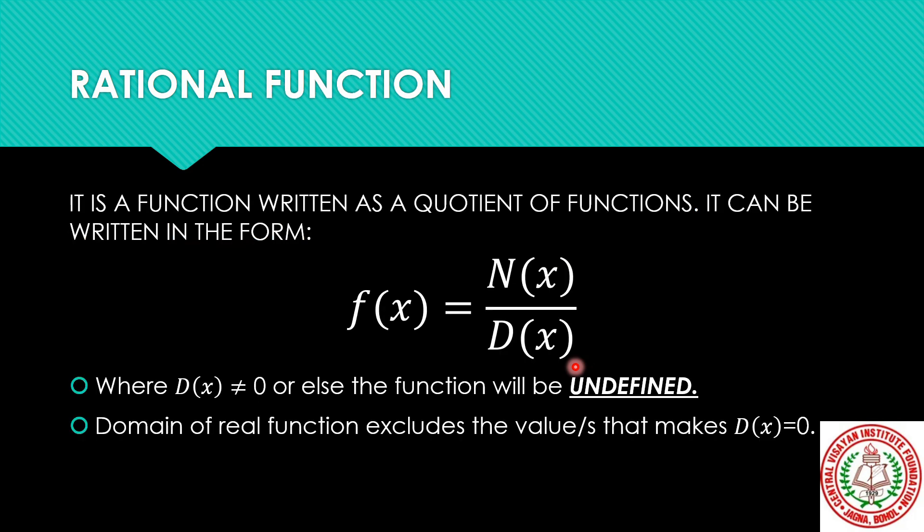In the previous video, we defined rational functions as functions written as quotient of functions n of x and d of x, where n of x is the function in the numerator and d of x is the function in the denominator. We emphasized that d of x here in the denominator should not be equal to 0. Otherwise, our function becomes undefined.